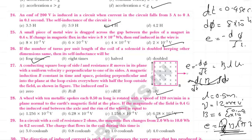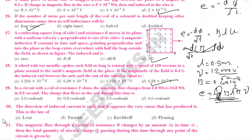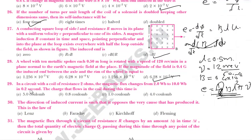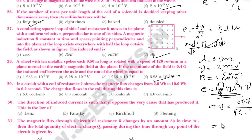In a circuit with a coil of resistance 2 ohm, the magnetic flux changes from 2 to 10 weber in 0.2 second. The charge that flows in the coil: ΔQ = Δφ / R = 8 / 2 = 4 coulomb. Remember the formula ΔQ = Δφ/R.